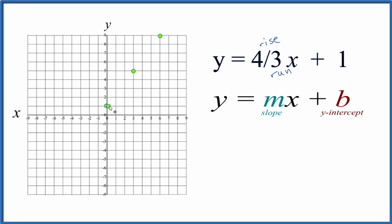We could also go down in the opposite direction. One, two, three, four, and to the left, one, two, three. That would be on our line as well.